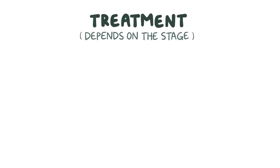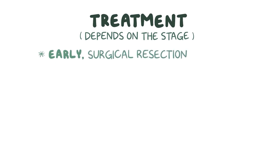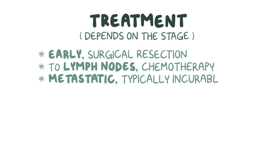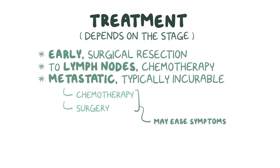Treatment for colorectal cancer depends on the stage of the cancer. Early cancers that are confined to the wall of the colon are often surgically resected, and those that have spread to nearby lymph nodes are often treated with chemotherapy. Unfortunately, metastatic cancers are typically incurable, but sometimes chemotherapy or surgery can be used to ease symptoms.